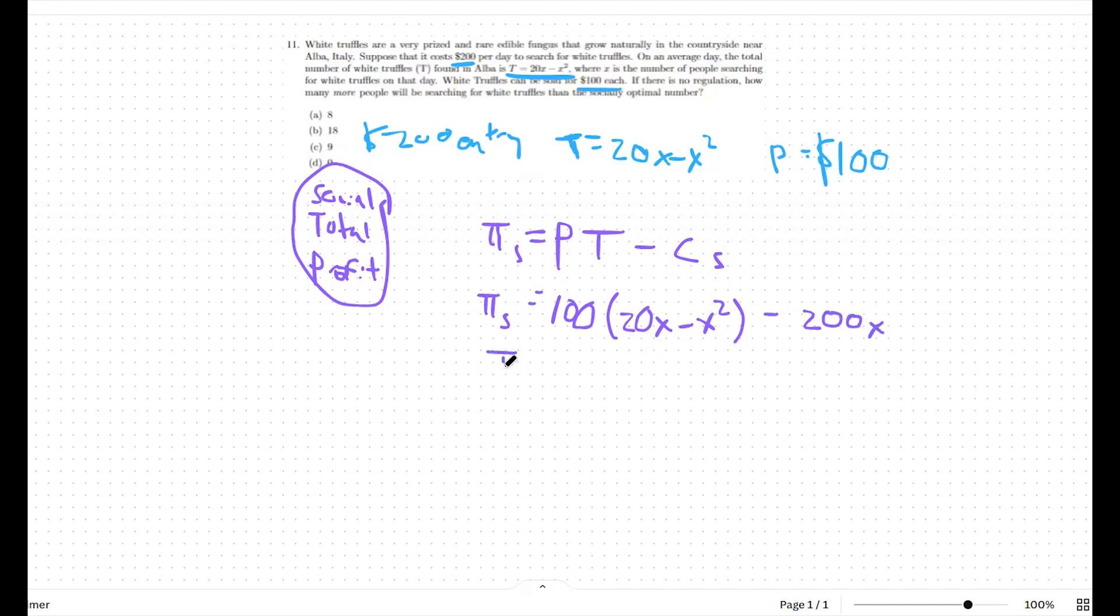That will be our social profit. From there, we can expand this out a bit and say that 2000x minus 100x squared minus 200x will be our social profit. And we can combine like terms again to say 1800x minus 100x squared is our social profit.